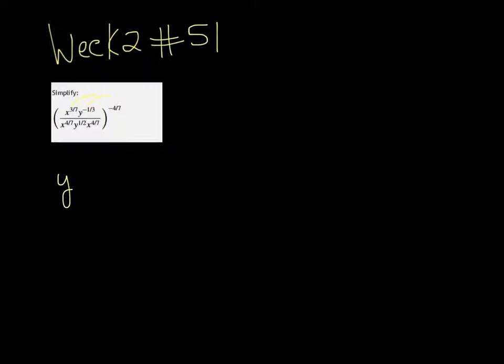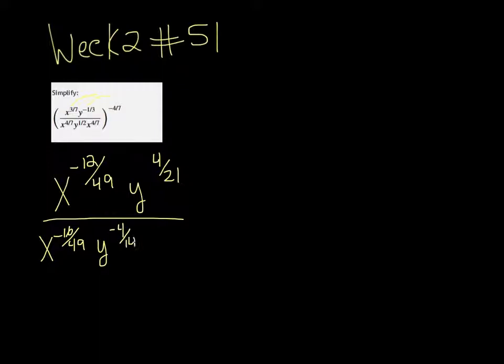So we get x to the negative 12 over 49, y to the positive 4 over 21, over x to the negative 16 over 49, y to the negative 4 over 14, and another x to the negative 16 over 49.